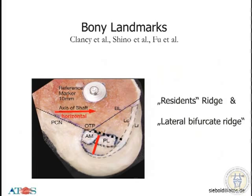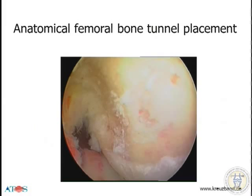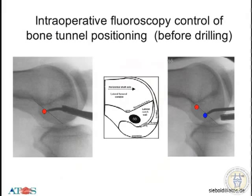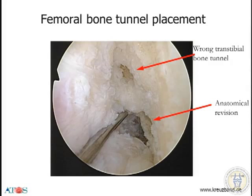The bony landmarks are very important, and I myself orientate only according to these bony landmarks, described by Clancy, Shino, Fu, and others. The most important ridge for me is the resident's ridge, which is just in front of the insertion — we have to be behind this resident's ridge with our bone tunnels. We also have to be always below the highest point of the notch, the over-the-top position, which is the posterior exit of the intercondylicum. I always use X-ray in the OR. You can see what we do with trans-tibial drilling — here's the highest point of the notch, here's the resident's ridge. This is the new bone tunnel, and here was a far-off trans-tibial bone tunnel, much too high.